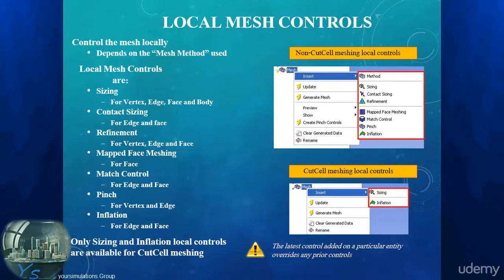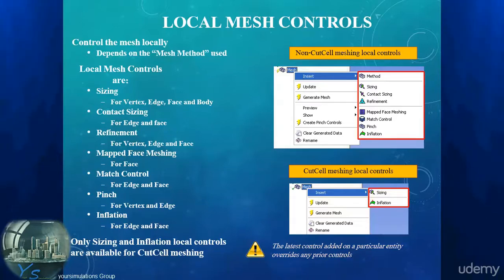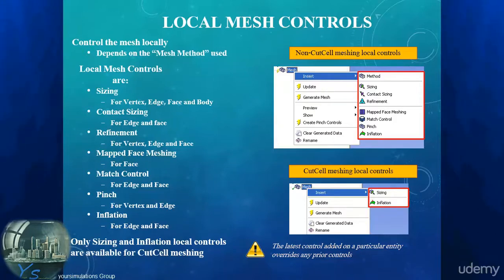To insert a local control, right-click on the mesh object in the outline and select Insert. Alternatively, we can first select the entity we want to scope the local control to and use the context menu in the geometry window. The list of available controls will be shorter because the meshing method and topology are checked automatically.